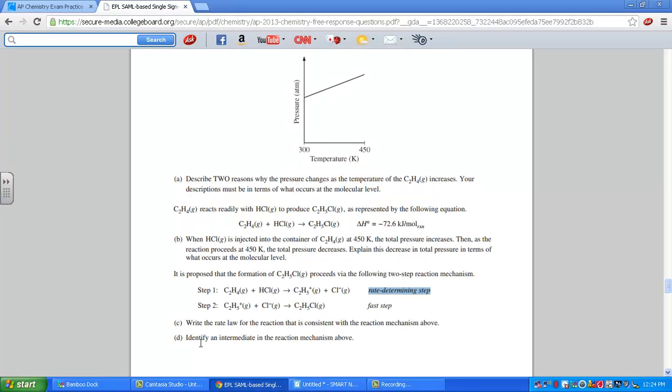Identify an intermediate in the reaction above. Now notice it says identify an intermediate. There are two. Intermediates are those that get made in the first step and then immediately used in the next. And so there are two possible correct answers.